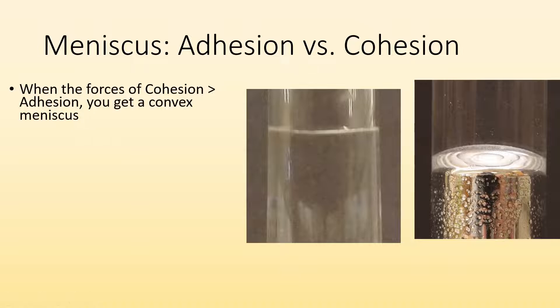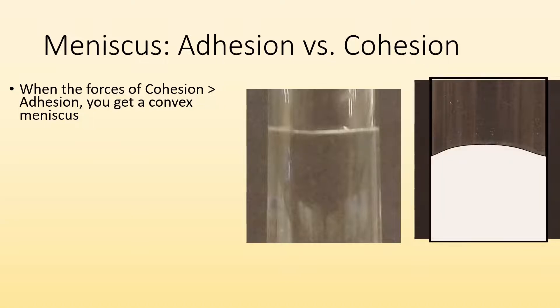Both forces can be present. You can have cohesion and adhesion. When the force of cohesion is greater than adhesion, you get this convex meniscus, which you see on the right.